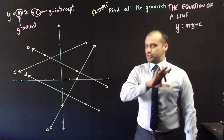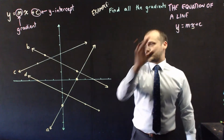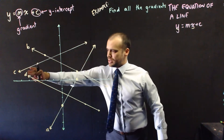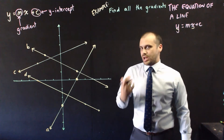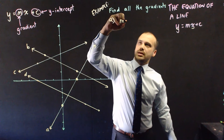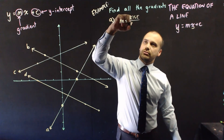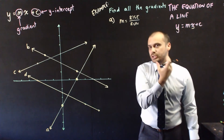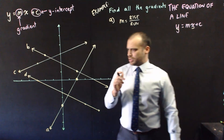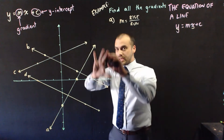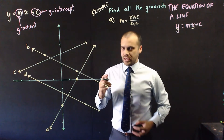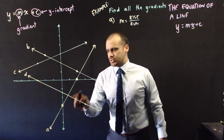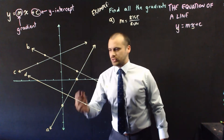This is such a vital skill that you just can't get enough practice with it. So we're going to find all the gradients of these four lines: line A, line B, line C, and line D. Starting with line A — m equals rise over run. We need to find how far up it's going for every so much across. We've got two very handy points, so let's use those and draw a right angle triangle.